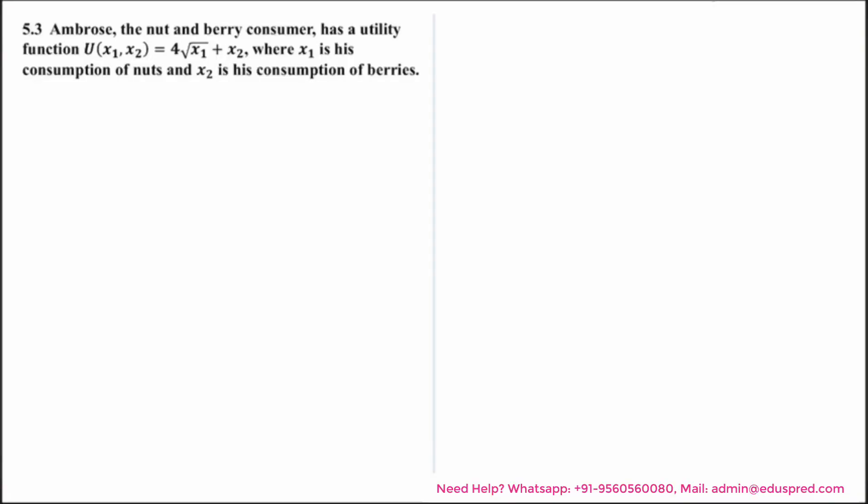In this video we will be solving this question which says Ambrose, the nut and berry consumer, has a utility function U(x1, x2) equal to 4 square root of x1 plus x2, where x1 is his consumption of nuts and x2 is his consumption of berries.